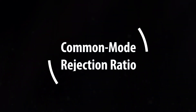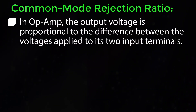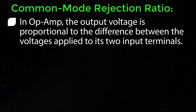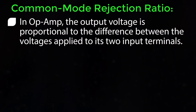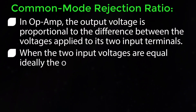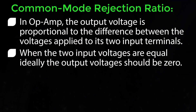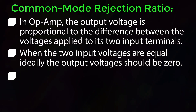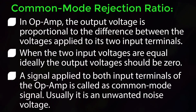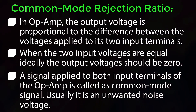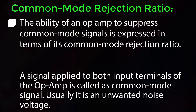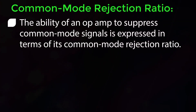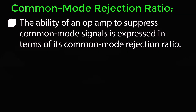Common Mode Rejection Ratio: In OPAMP, the output voltage is proportional to the difference between the voltages applied to its two input terminals. When the two input voltages are equal, ideally the output voltage should be 0. A signal applied to both input terminals of the OPAMP is called a Common Mode signal. Usually, it is an unwanted noise voltage. The ability of an OPAMP to suppress Common Mode signals is expressed in terms of its Common Mode Rejection Ratio, CMRR.